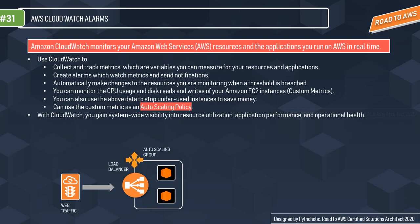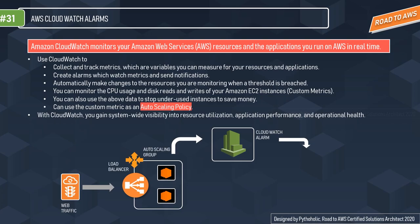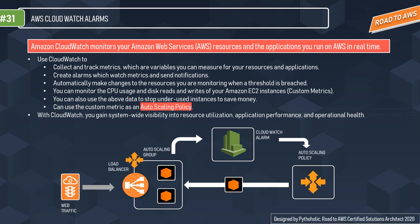With our application running and web traffic going through the load balancer, and with our auto scaling group in place, a CloudWatch alarm monitors the situation. The CloudWatch Logs Agent provides an automated way to send log data to CloudWatch Logs from EC2 instances. Based on the metrics captured from the logs, a decision is made and CloudWatch events trigger a scaling policy. Once instances pass the health check, they're added behind the ELB and start serving requests.